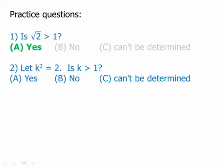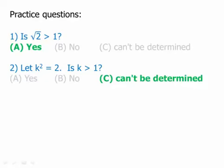Number two looks similar: k squared equals 2 — is k greater than 1? Now notice there's no radical sign printed, so if I want to get the value of k myself, I have to initiate the act of taking a square root myself. That means I have to consider both the positive and negative roots. So k would be either the positive square root of 2 or the negative square root of 2, and because it could be one or the other, we don't know whether it's larger than 1 or smaller than 1. This answer cannot be determined.